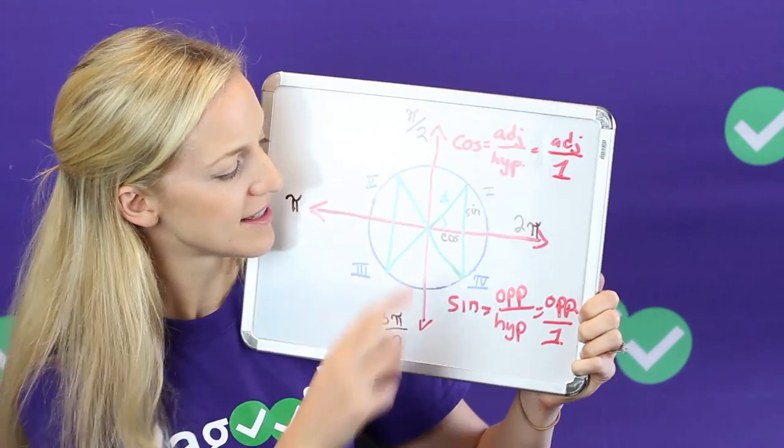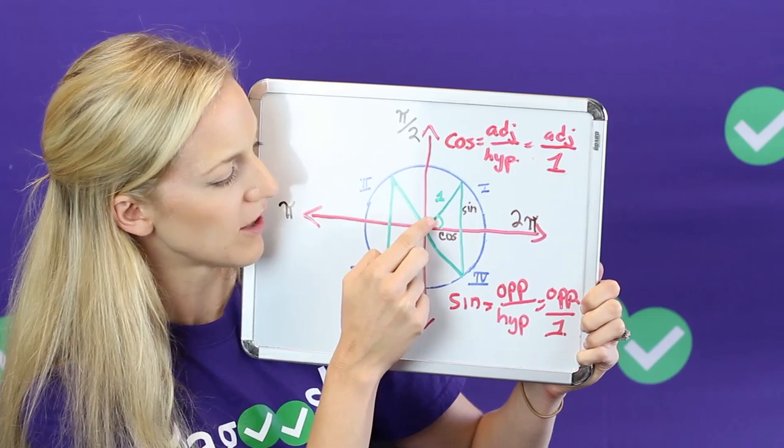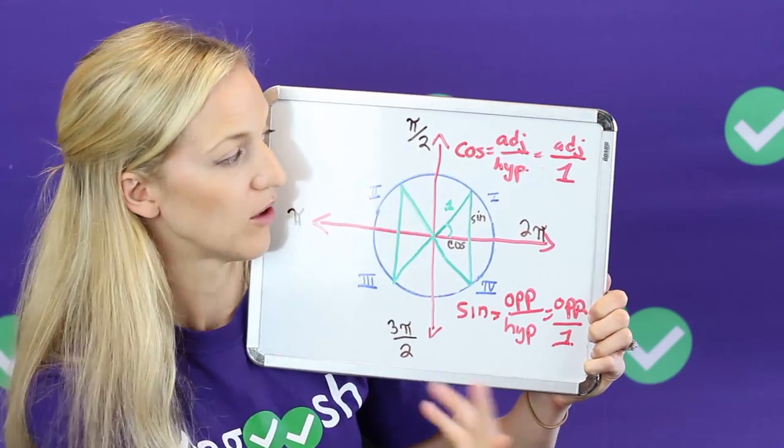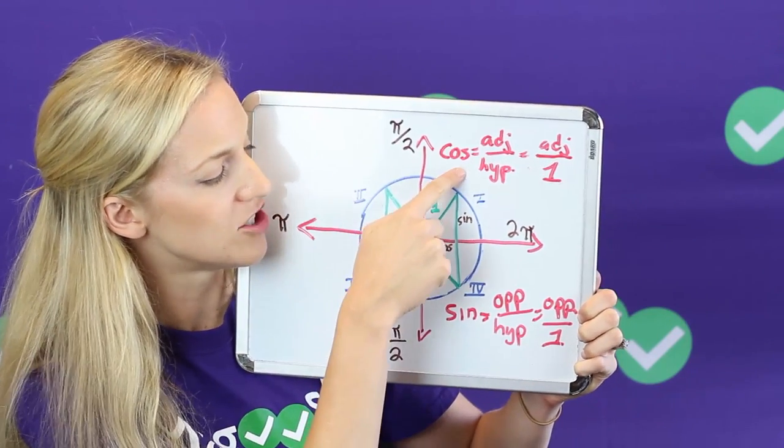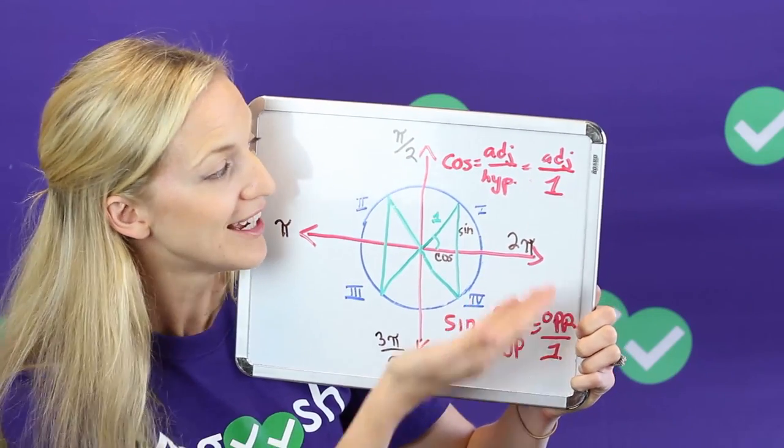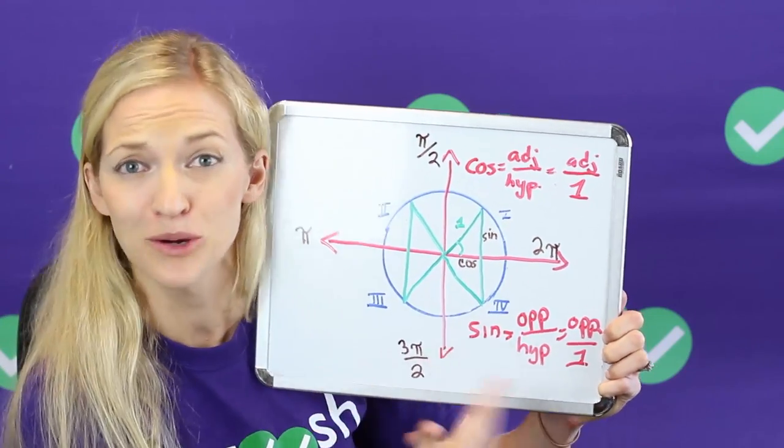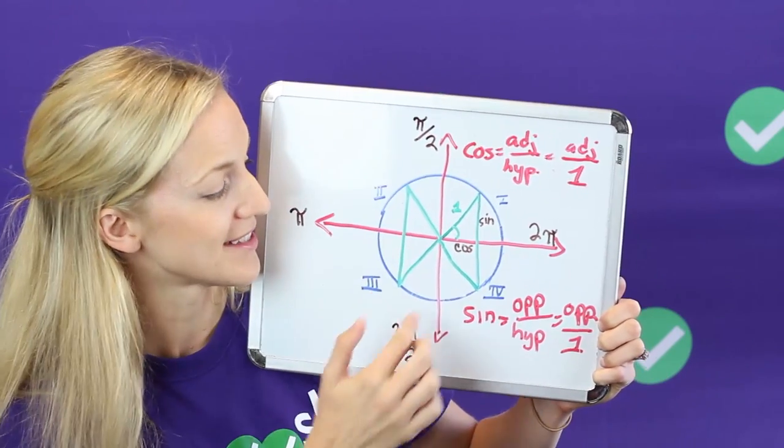Now let's look at this angle right here in quadrant one. So remember SOHCAHTOA, right? So cosine is adjacent over hypotenuse. Well because our hypotenuse is one in the unit circle, it's really just the adjacent side over one or the cosine actually equals the adjacent side.